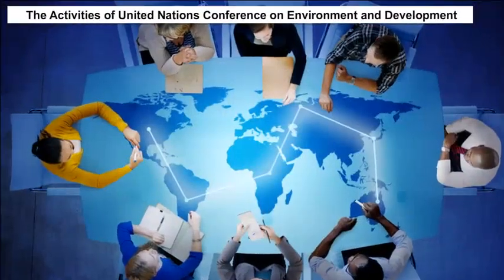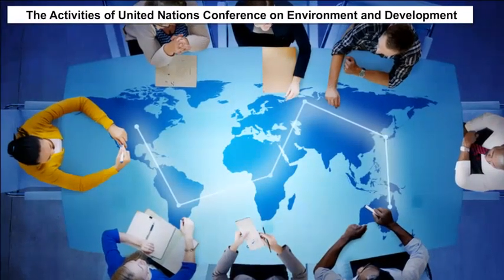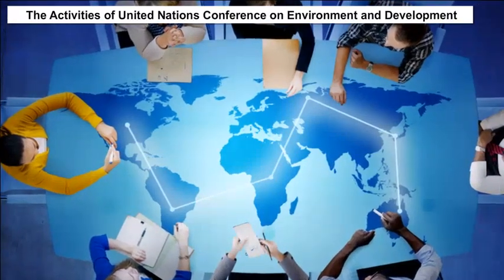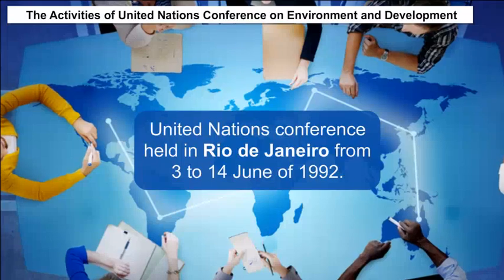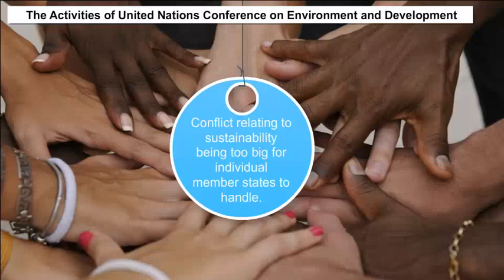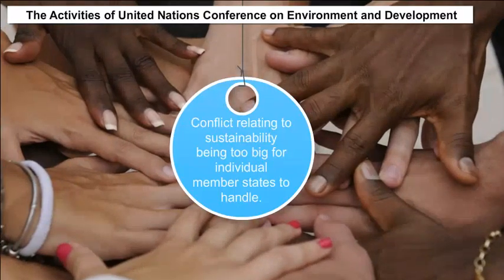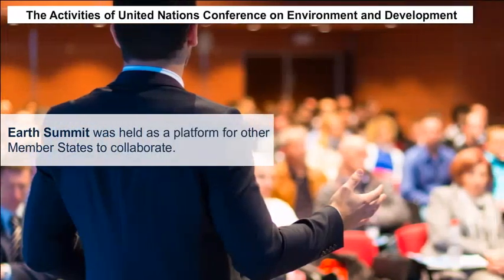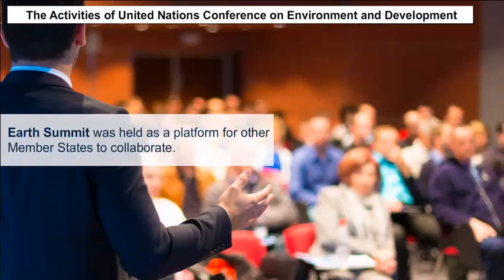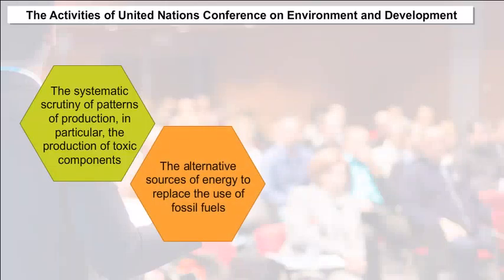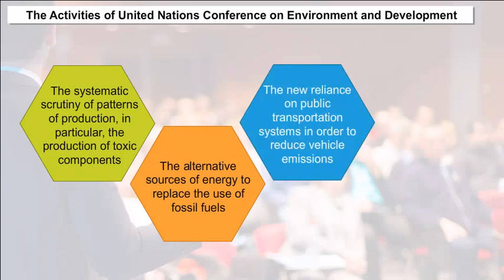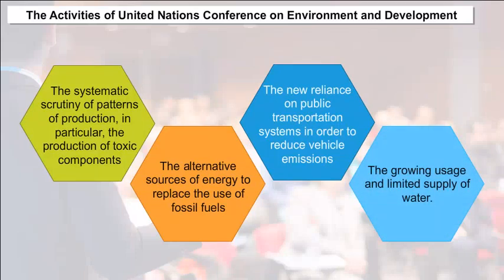The Activities of the United Nations Conference on Environment and Development (UNCED): UNCED was a major United Nations conference held in Rio de Janeiro from 3rd to 14th June 1992. Due to conflicts relating to sustainability being too large for individual member states to handle, the Earth Summit was held as a platform for member states to collaborate. Issues discussed included: (a) systematic scrutiny of patterns of production, particularly toxic components; (b) alternative sources of energy to replace fossil fuels; (c) new reliance on public transportation to reduce vehicle emissions; and (d) the growing usage and limited supply of water.